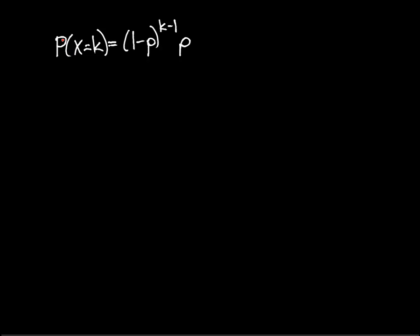So this probability is the probability that you have to do k trials to get one occurrence of the event. And k is going to be some positive integer: 1, 2, 3, etc. And p is a probability, so it's some number between 0 and 1.